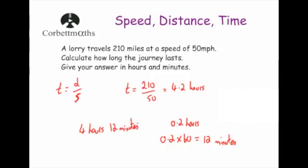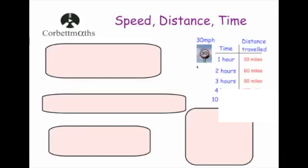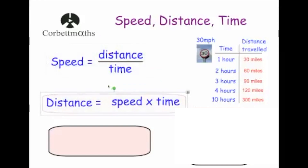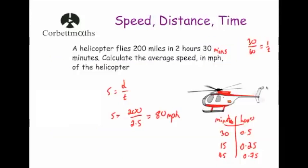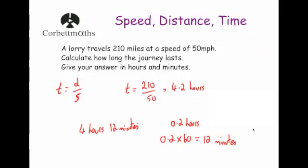The important things to learn from this video: the three relationships — speed equals distance divided by time, distance equals speed times time, and time equals distance divided by speed. Be careful when questions involve hours and minutes — convert them into hours (or minutes) as needed. And if your answer is a decimal number of hours, multiply the decimal part by 60 to find the minutes.